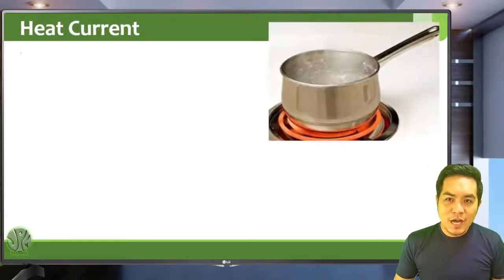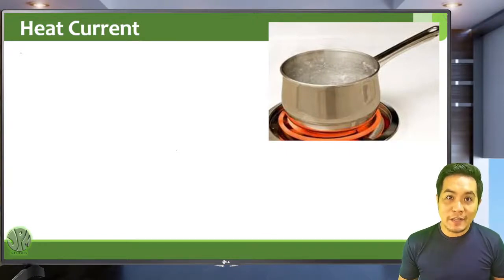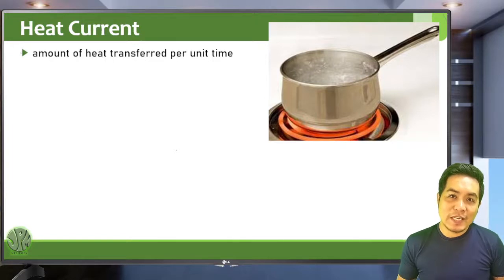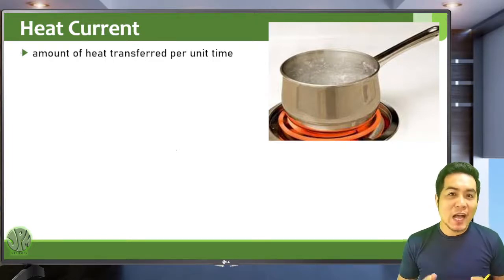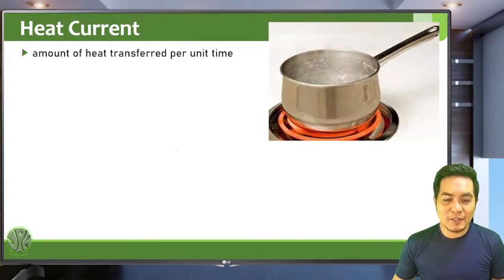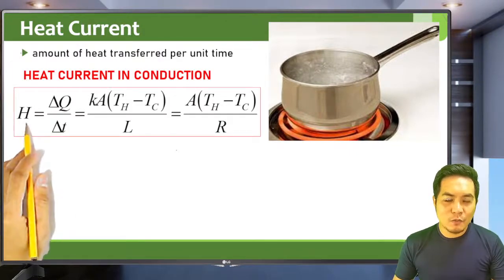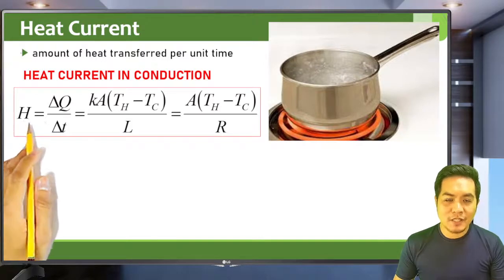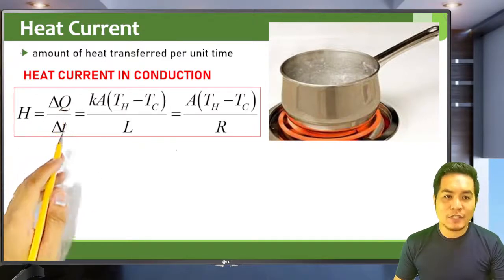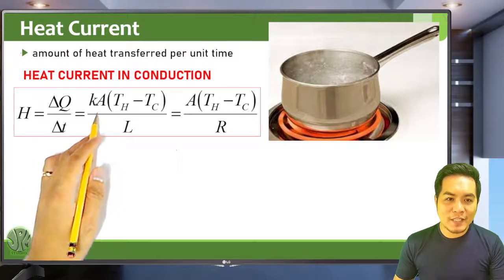Another way to describe how fast heat transfer is occurring is by measuring the heat current — the amount of heat transferred per unit time. This tells you how fast heat is moving through a material. In conduction, the heat current, symbolized H, is defined as the change in heat over change in time.